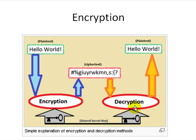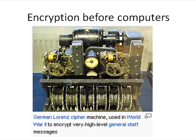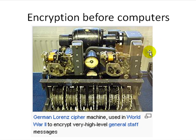Encryption has existed even before computers. Caesar used it for messages to his army with the Caesar cipher. In World War 2, the Germans used the Lorenz cipher machine to encrypt high-level secret messages, because everyone was listening to telegraph wires and they didn't want people to know their plans. The rotors at the bottom made it really complicated to figure out the password. Alan Turing is one of the people who actually cracked the German cipher in World War 2.